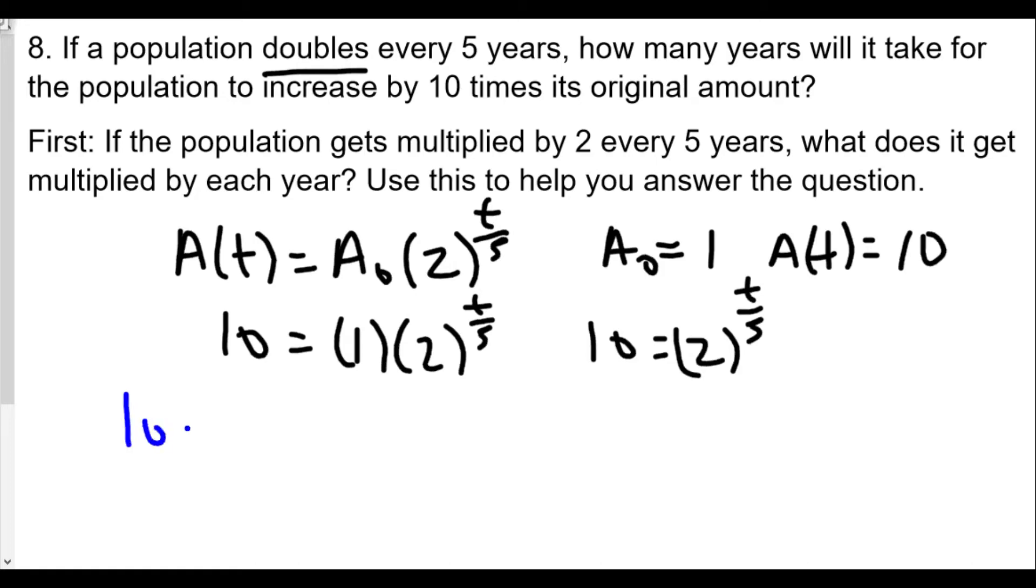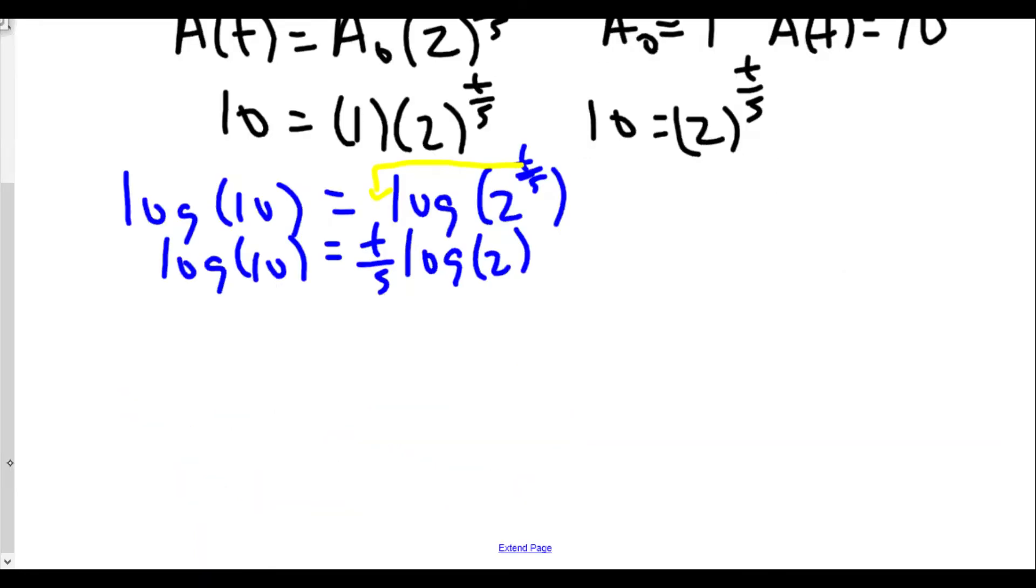So we take the log of 10 equals the log of 2 to the t over 5 power. Now it doesn't matter that we have the exponent to be t over 5. We're going to still use our power rule to bring the exponent down. And we see we're going to get the log of 10 equals t over 5 times the log of 2.